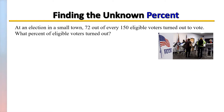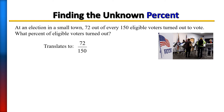At an election in a small town, 72 out of every 150 eligible voters turned out to vote. What percent of eligible voters turned out? We were given that 72 out of 150 turned out, so let's write that as a fraction: 72 over 150. Now to find how many of those voters that represents as a percentage, we need to convert this fraction into a percent.